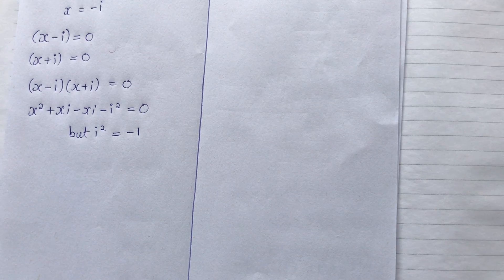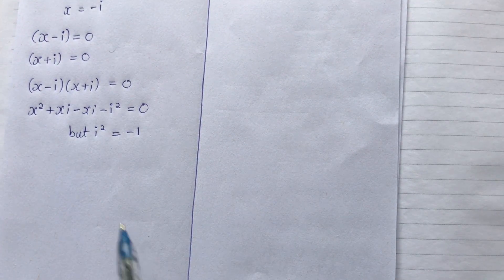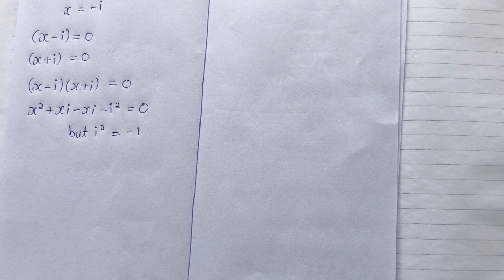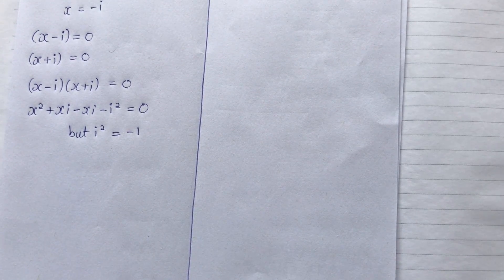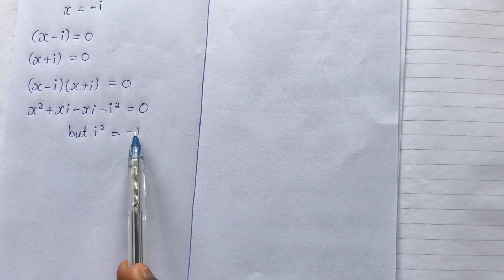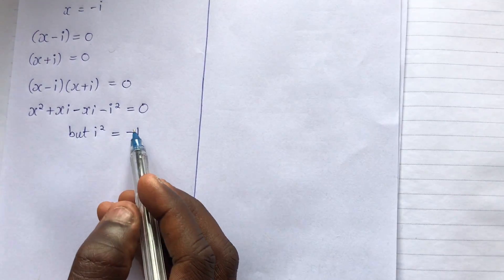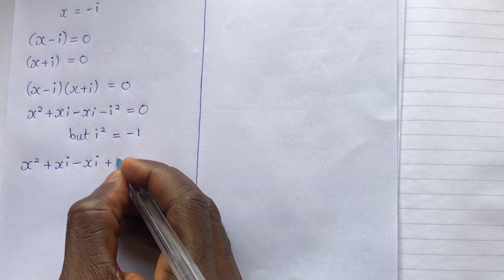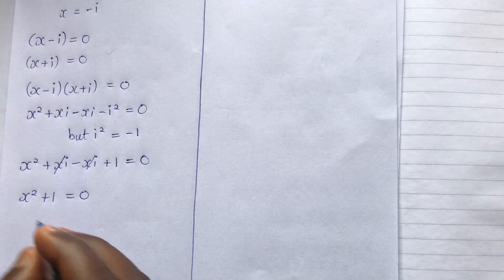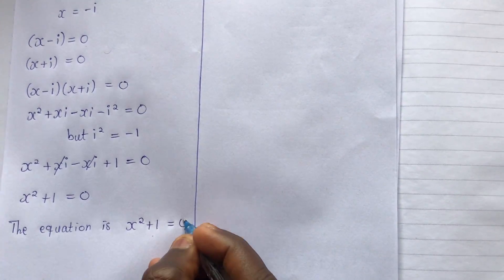If this is your first time visiting this channel and you don't understand this under complex numbers, visit my channel — I've done an introduction to complex numbers under the playlist Engineering Maths 2. The imaginary unit i equals the square root of negative one, and squaring both sides gives i squared equals negative one. Substituting that in, we get x squared plus xi minus xi plus one equals zero. The xi terms cancel, leaving us with x squared plus one equals zero.